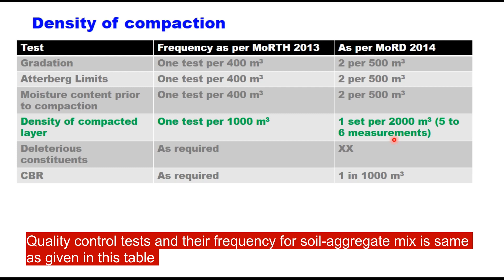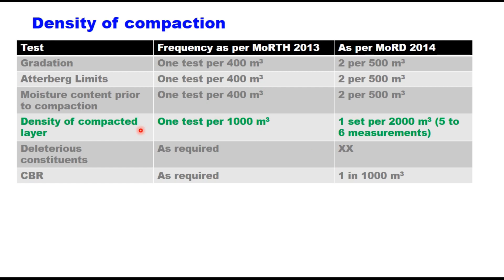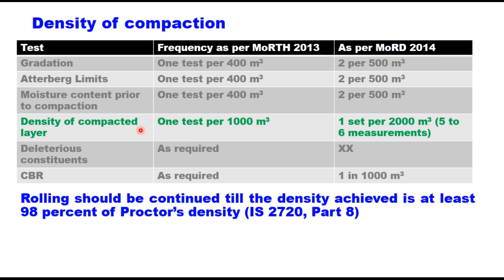Density can be measured either by core cutting method or by sand replacement method, depending upon the facility available at site. In case of low volume roads, MORD specifications permit use of soil aggregate mixture for sub-base, base, or even surface course layer, with specific gradings for each application; the test and frequency of tests for quality control remain the same. Rolling should be continued until the density achieved is at least 90% of Proctor density determined as per IS 2720 Part 8, that is heavy compaction, for national highway, state highway, and expressways.